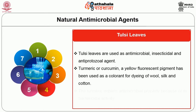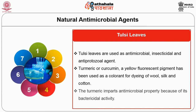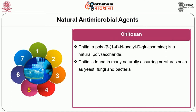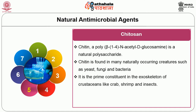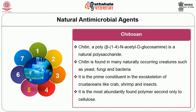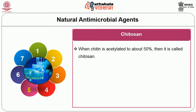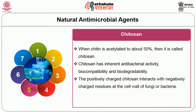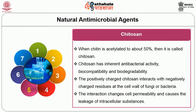Turmeric or curcumin, a yellow fluorescent pigment, has been used as a colorant for dyeing of wool, silk and cotton. The turmeric imparts antimicrobial property because of its bactericidal activity. Chitosan, a poly-beta-1,4-N-acetyl-D-glucosamine, is a natural polysaccharide. Chitin is found in many naturally occurring creatures such as yeast, fungi and bacteria, and is a prime constituent in the exoskeleton of crustaceans like crab, shrimp and insects. It is the most abundantly found polymer second only to cellulose. When chitin is deacetylated to about 50%, it is called chitosan. Chitosan has inherent antibacterial activity, biocompatibility and biodegradability. The positively charged chitosan interacts with negatively charged residues at the cell wall of fungi or bacteria, changing cell permeability and causing leakage of intracellular substances.